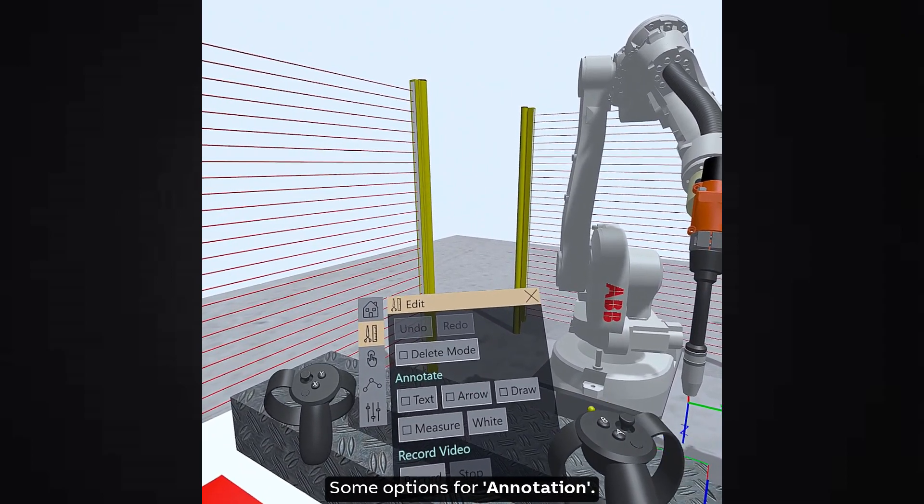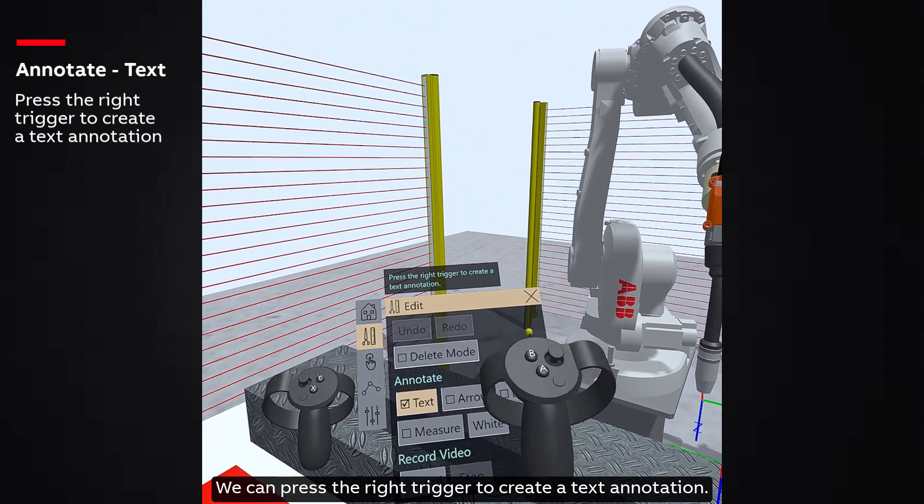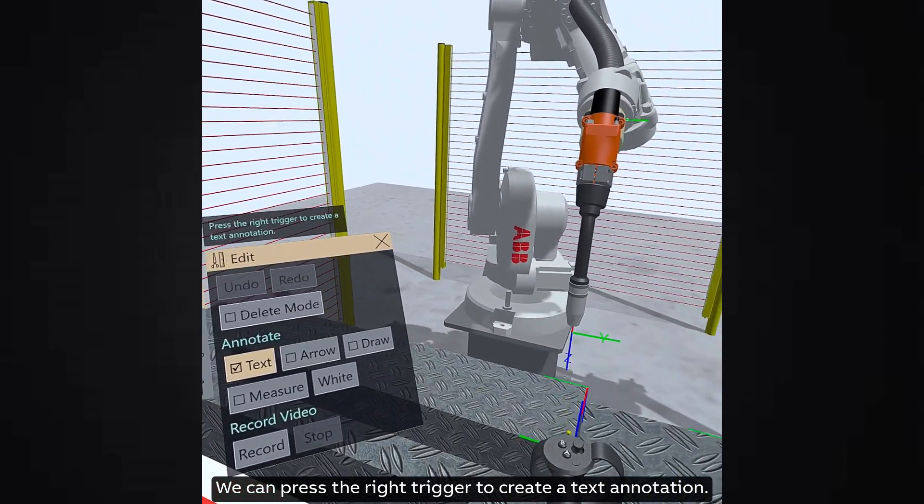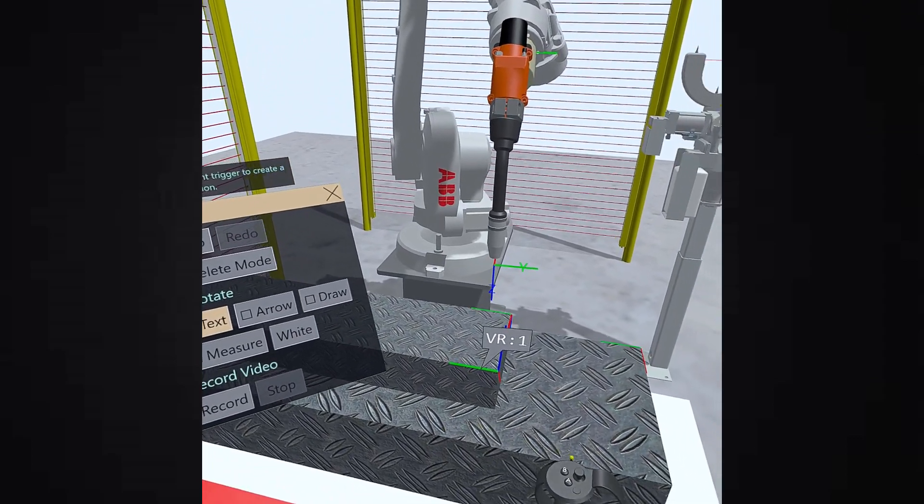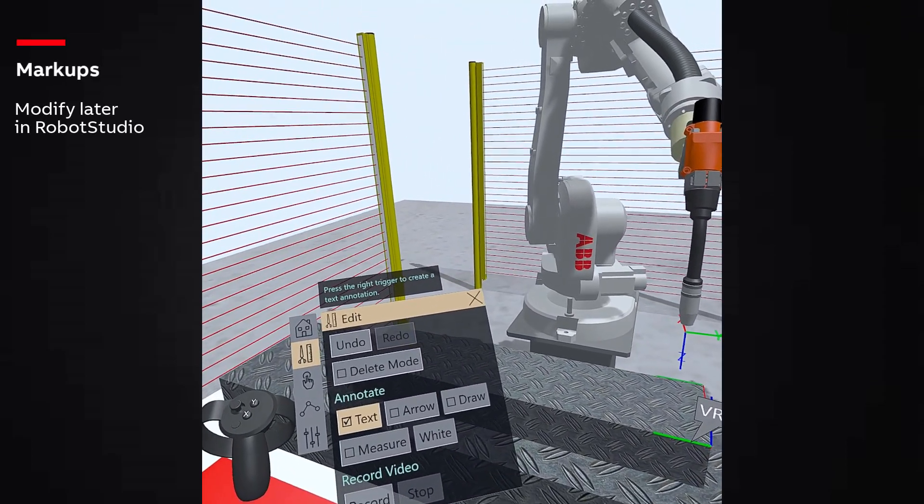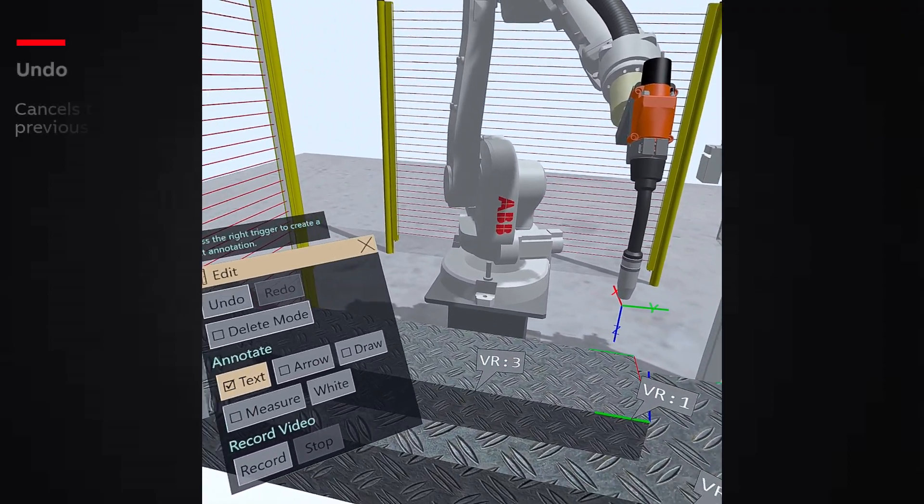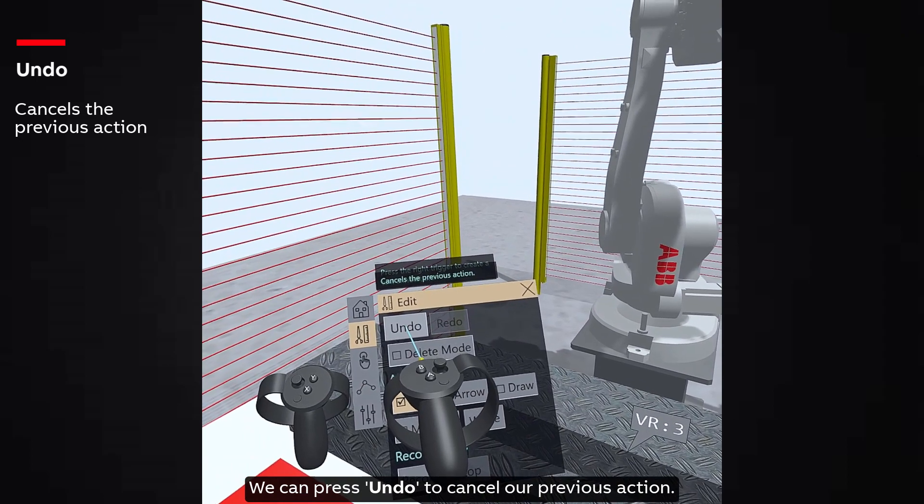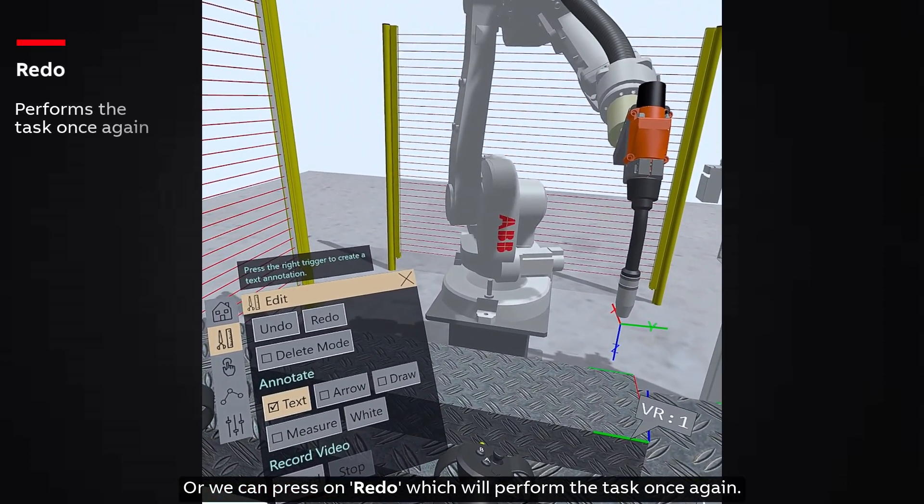Some options for annotation. Let's start with text. We can press the right trigger to create a text annotation. These are the markups which can be modified in Robot Studio. We can press undo to cancel our previous action, or we can press on redo which will perform the task once again.